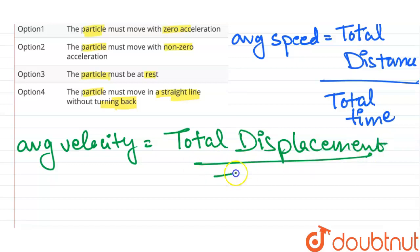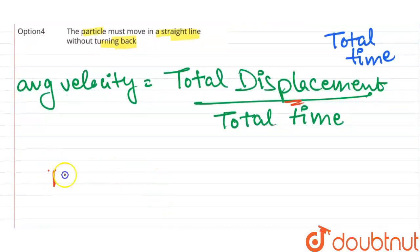Now, for average velocity and average speed to be equal, displacement should be equal to distance.